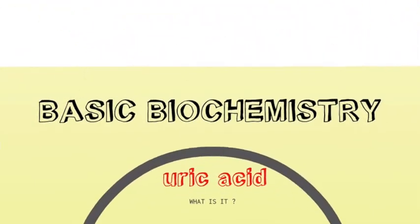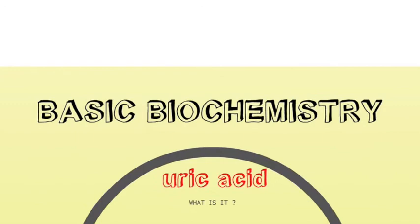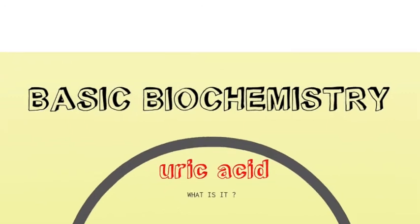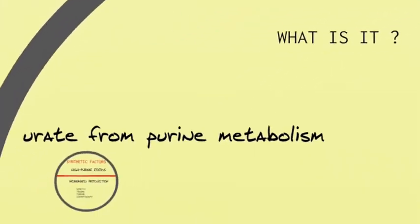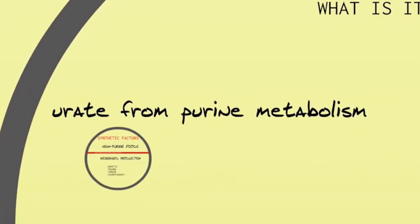To start off with the biochemistry, let's ask: what is uric acid? Uric acid is a salt that is the end product of purine metabolism, and purines enter metabolism through diet and through endogenous production.